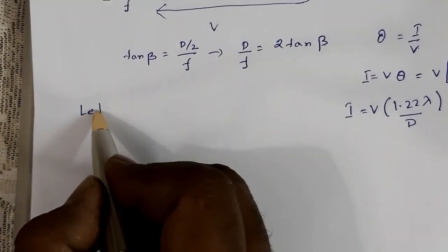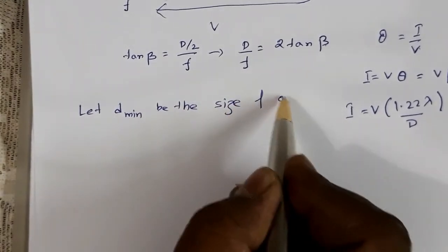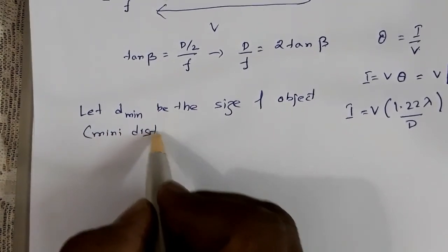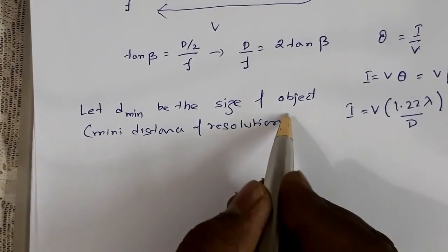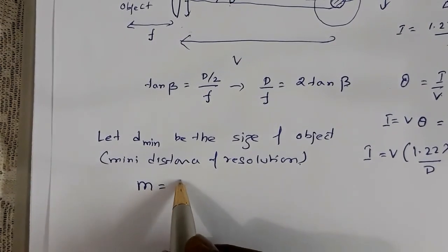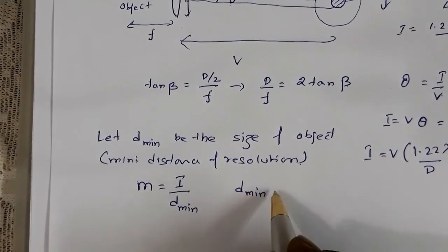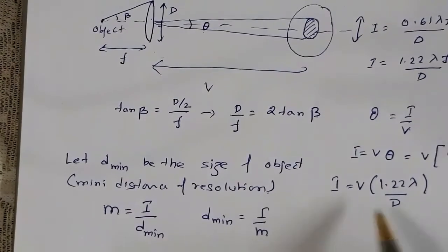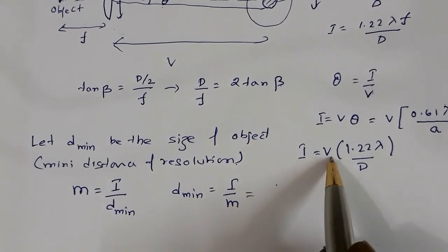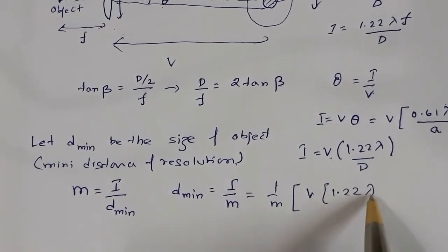Let D_minimum be the size of the object — that is the minimum distance of resolution. If M is the magnification, then M = image size / object size = I / D_minimum. This implies D_minimum = I/M. Substituting I = V · 1.22λ/D, we get D_minimum = (1/M) · V · 1.22λ/D.